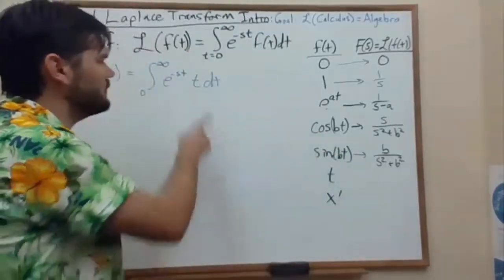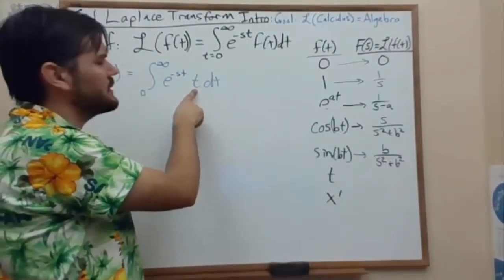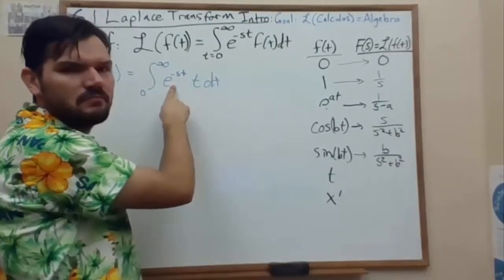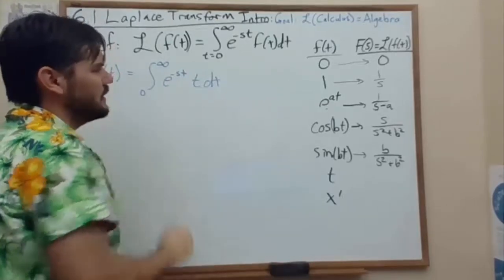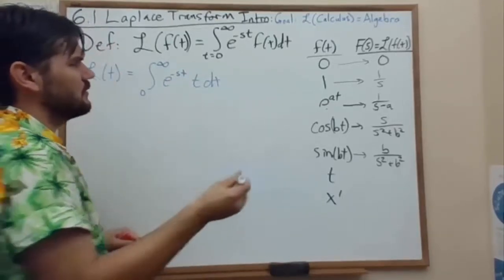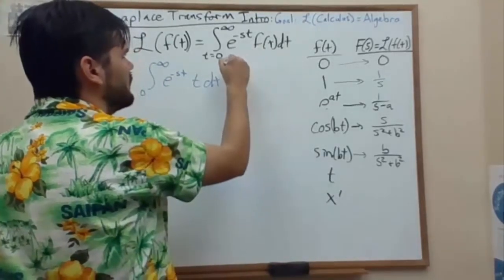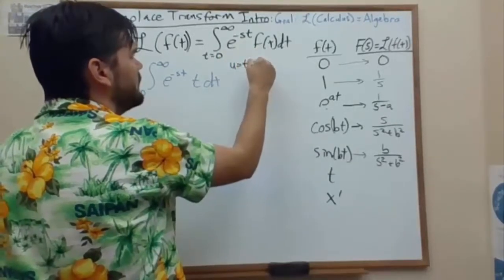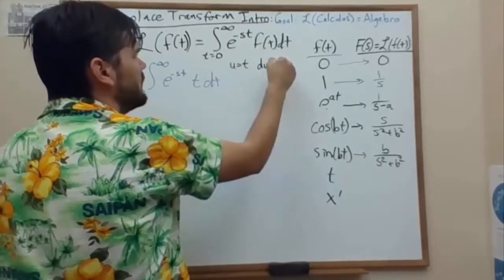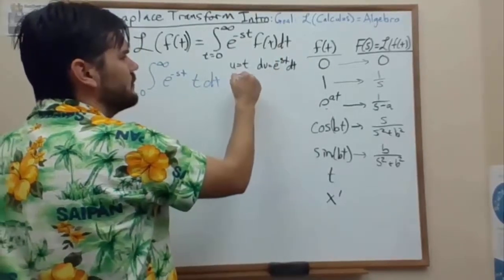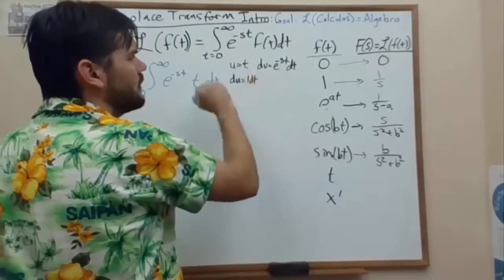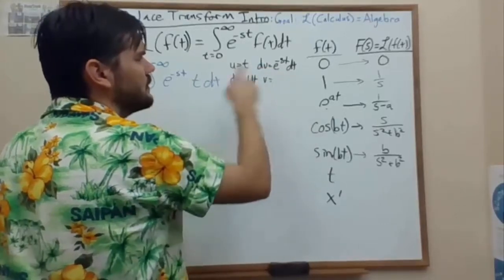So we want to choose a function that will differentiate away to be simpler and choose a function that can integrate to be simpler or just the same. So let u equal t and dv equal e to the negative st dt. We differentiate u and integrate dv.